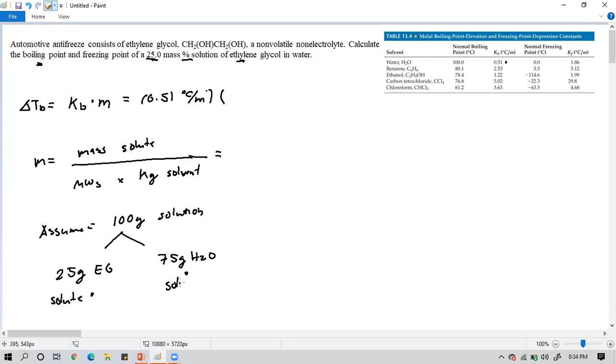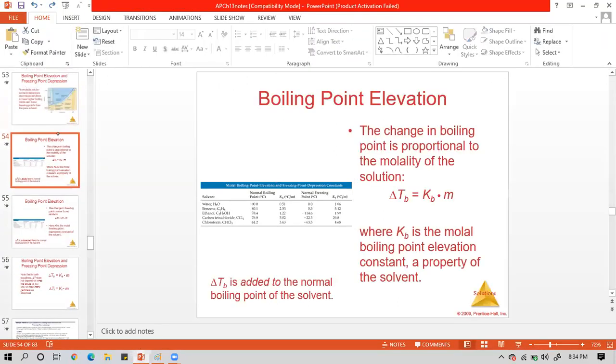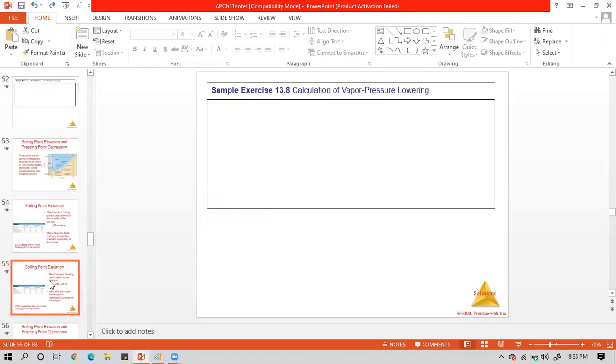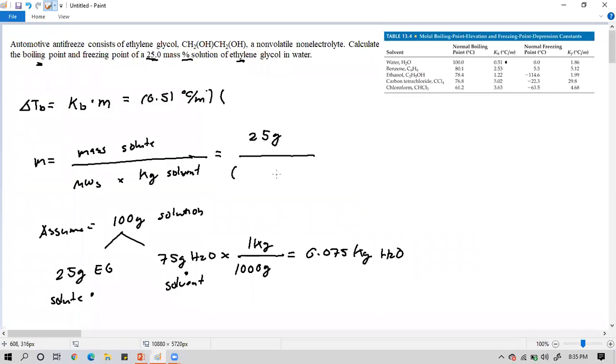Now if we're going to analyze this problem, let's assume we have 100 grams of solution with 25% mass solute of ethylene glycol. Therefore, in 100 grams, we have 25 grams of ethylene glycol and 75 grams of water as solvent. We'll do direct substitution. Convert to kilograms: 75 grams times 1 kg over 1000 grams equals 0.075 kilograms of water. So substitute: 25 grams all over the molecular weight of ethylene glycol.